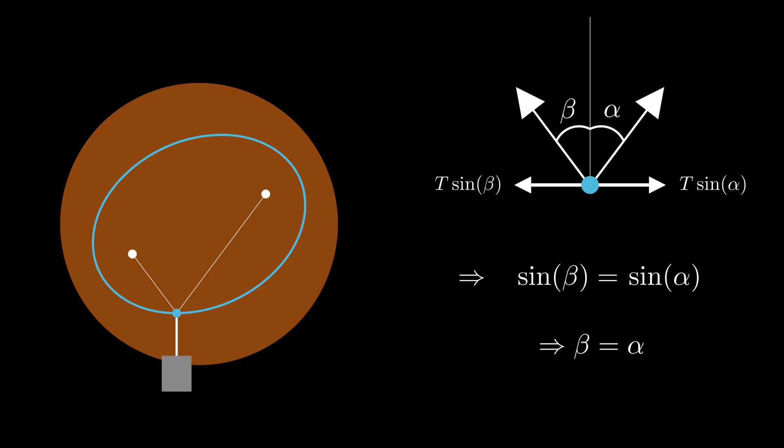There you have it, definite proof that the reflection property of the ellipse must hold. I hope you enjoyed this proof. A general takeaway from this example is that physical intuition often leads to smart solutions.